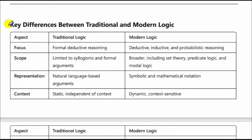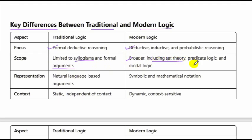Key differences between traditional and modern logic: In terms of focus, traditional logic focuses on formal deductive reasoning, whereas modern logic focuses on deductive, inductive, and probabilistic reasoning. In scope, traditional logic is limited to syllogisms and formal argumentation, whereas modern logic is broader and includes set theory, predicate logic, and modal logic. For representation, traditional logic uses natural language-based arguments, whereas modern logic uses symbolic and mathematical notations.